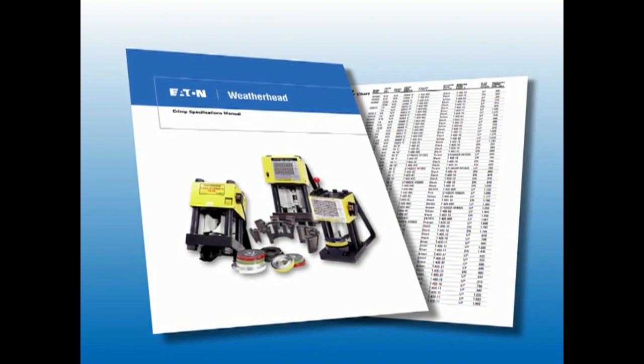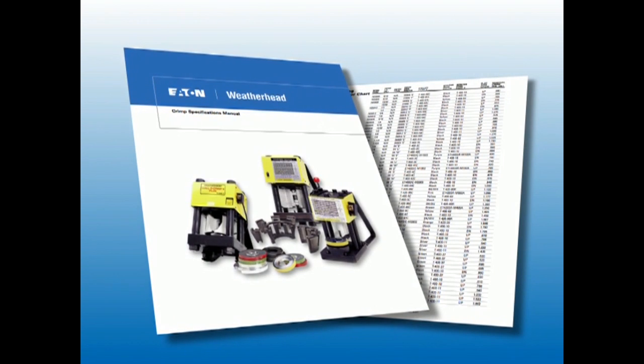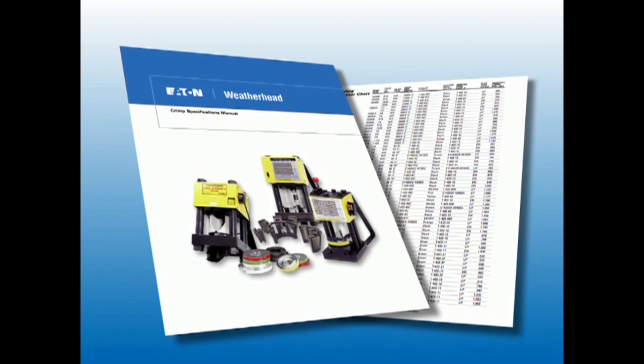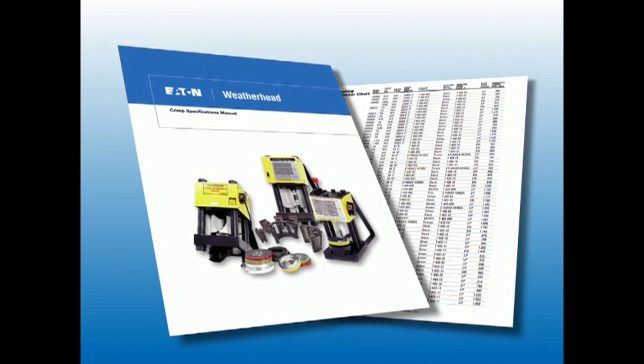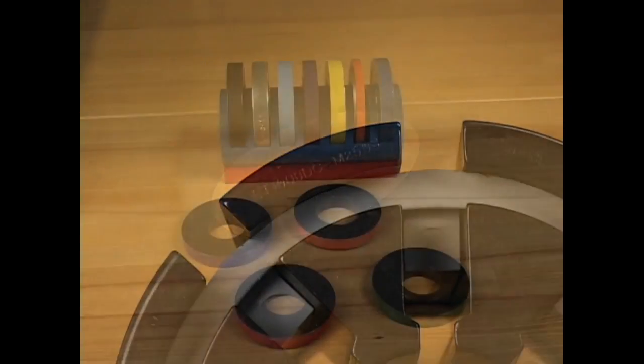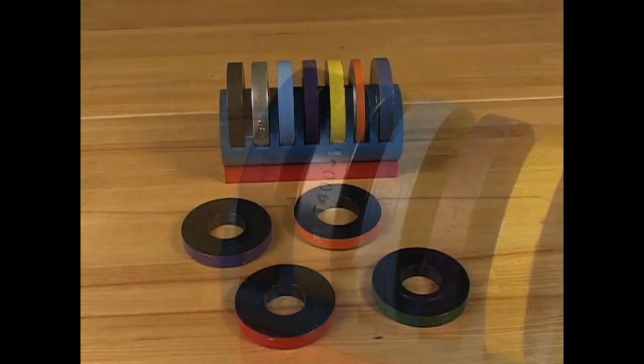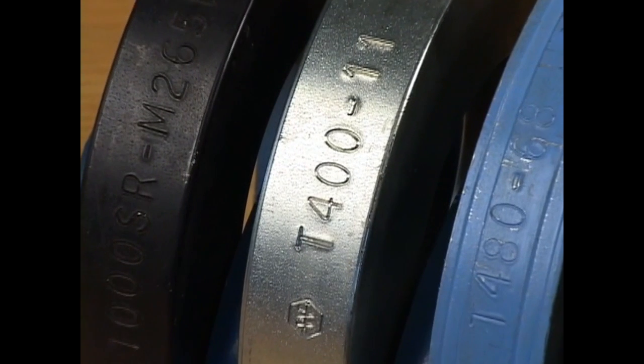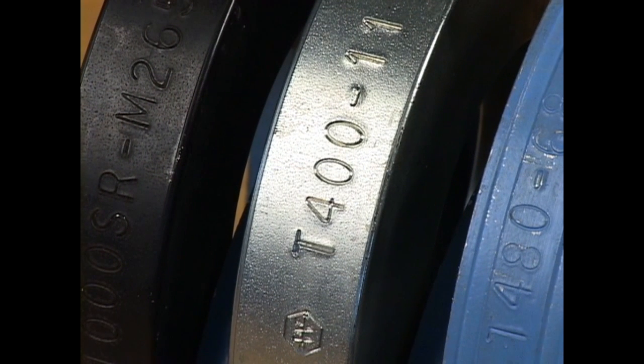Next, refer to the crimp specification manual for the correct collets, spacer ring, and spacer ring position. Some hose types do not require the use of a spacer ring. Collet part numbers are stamped on the top of each collet half. Spacer rings are color coded and they are also stamped with a part number for easy identification. The proper weatherhead tooling must be selected for each model of press.